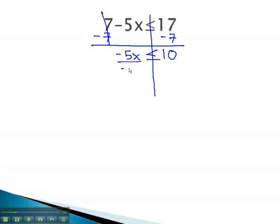Get the x alone by dividing both sides by the negative 5. Notice here, we are dividing by a negative. This means the inequality is going to have to switch directions. We now have x is greater than or equal to negative 2.